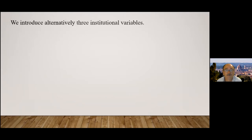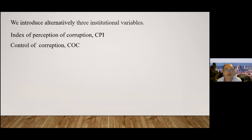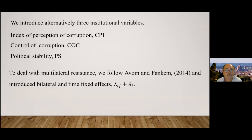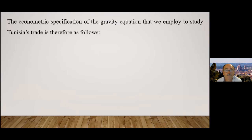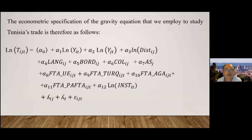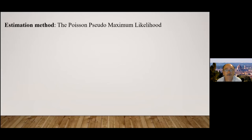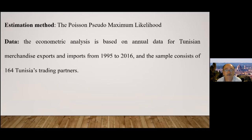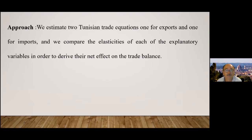Three institutional variables are introduced alternatively: index of perception of corruption, control of corruption, and political stability. Bilateral anti-fixed effects are introduced following Avom and Funka (2014) to deal with multilateral resistance. The analysis is based on annual data for Tunisian merchandise exports and imports from 1995 to 2016, with a sample of 164 Tunisian trading partners. To derive the net effect on the trade balance, the gravity equation is estimated separately for exports and imports, then the elasticities of each explanatory variable are compared.